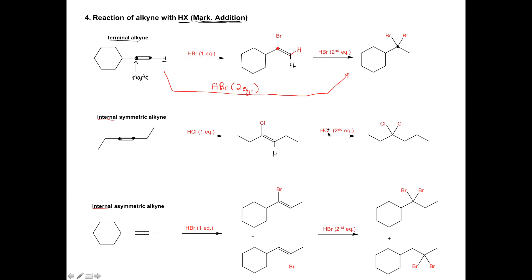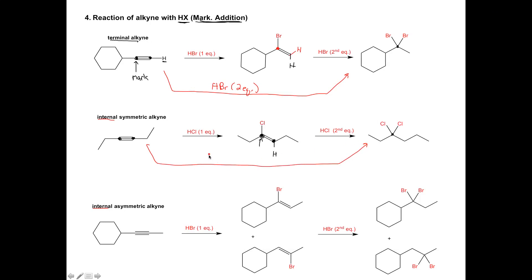As we add our second equivalent, we do have a Markovnikov carbon — that is the carbon on the left, which has no hydrogens attached. The carbon on the right has one hydrogen, so that is our Markovnikov position. Using the second equivalent of HCl, we're going to add the chlorine to the Markovnikov position on the left, so the two chlorines are added to the same carbon and the hydrogens are added to the same carbon. This would be written as HCl with two equivalents.